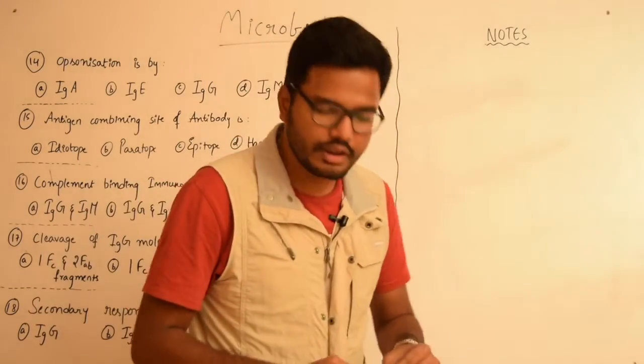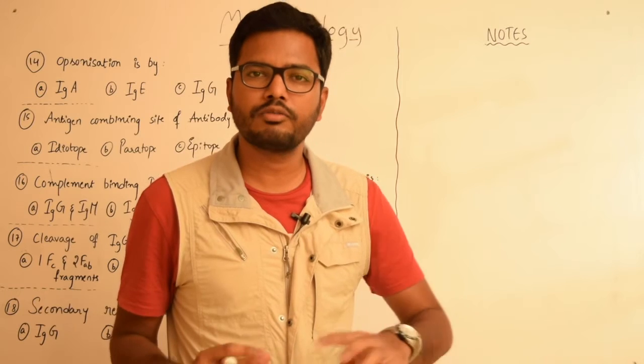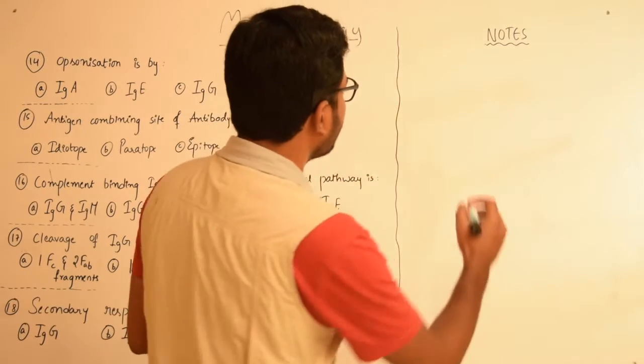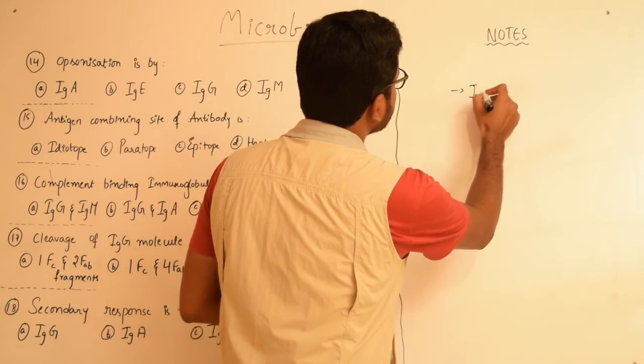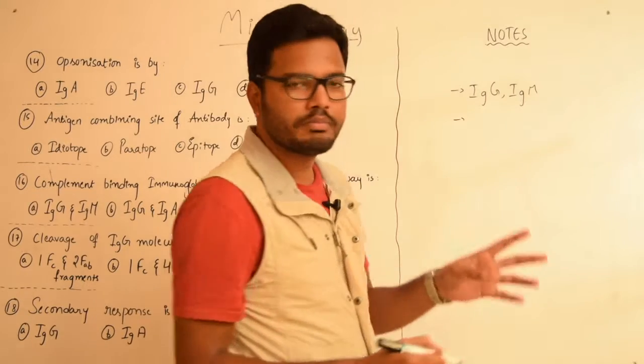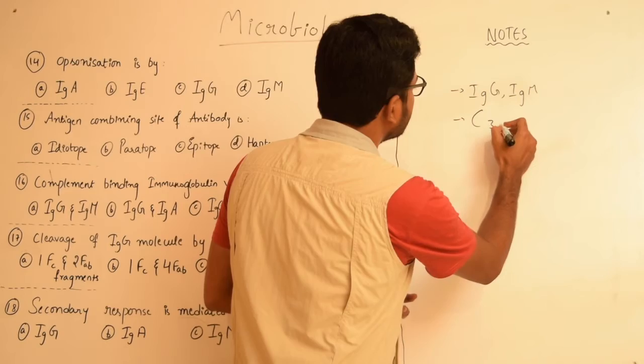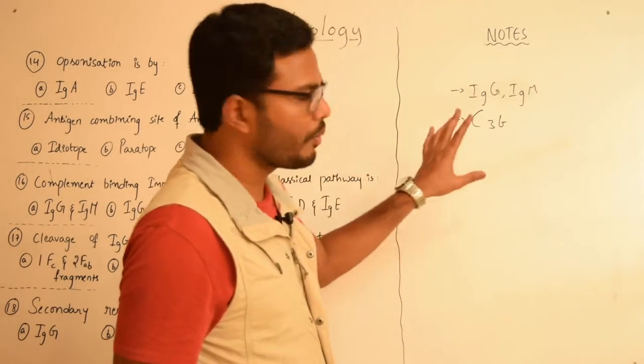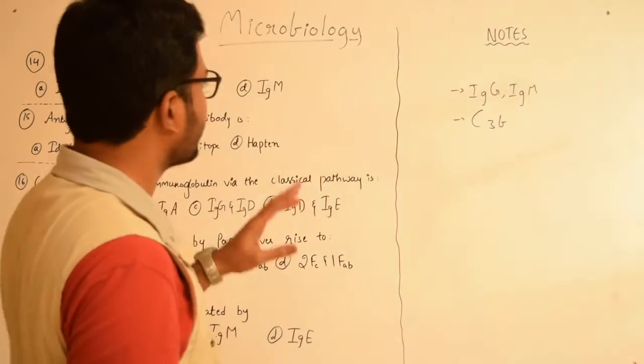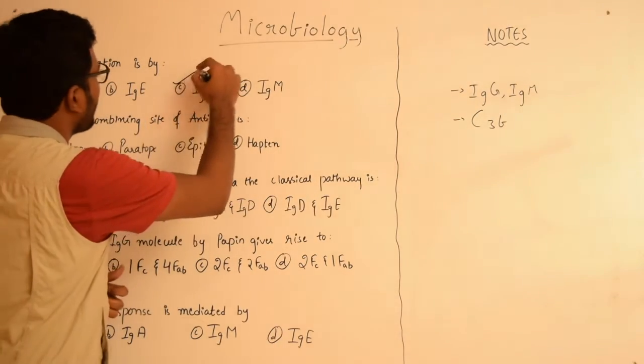Opsonization is a process by which there is enhancement of phagocytosis by means of coating antigenic particles by the so-called opsonin antibodies. The opsonin antibodies include IgG, IgM, and in the complement pathway the complement particle involved in opsonization is C3B. So opsonization is a process where there is enhancement in phagocytosis and the antibodies involved are IgG as well as IgM, so we have two options here which are right answers.